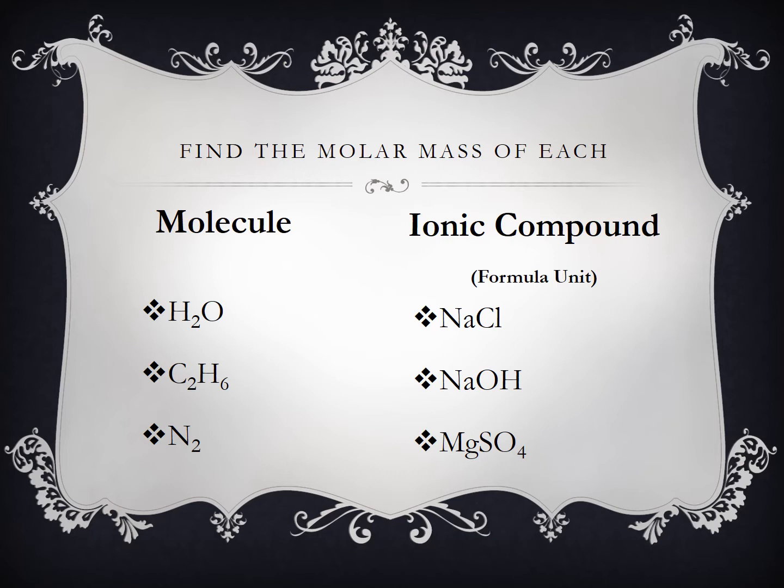To find the molar mass of each compound, you use the periodic table. Make sure you multiply each atom by the number of atoms of each element. For example, water, there's two hydrogens, so you have to multiply hydrogen by 2 plus the mass of oxygen. At this time, you can pause it to see if you get the right answers. But here are your correct answers. Make sure you know that the numbers make sense. Notice N2 is nitrogen diatomic, because nitrogen is one of the diatomic elements.